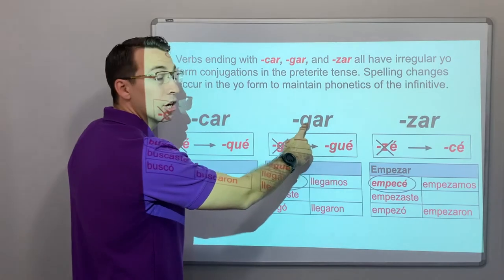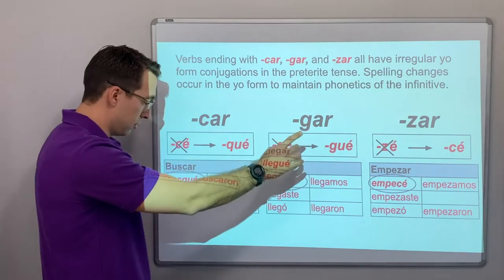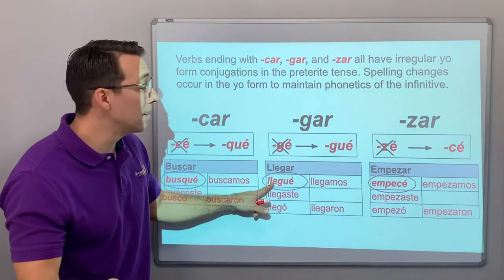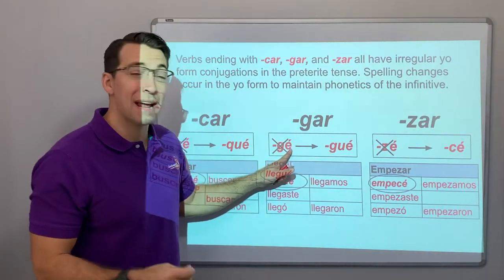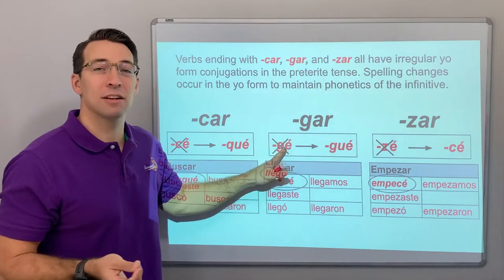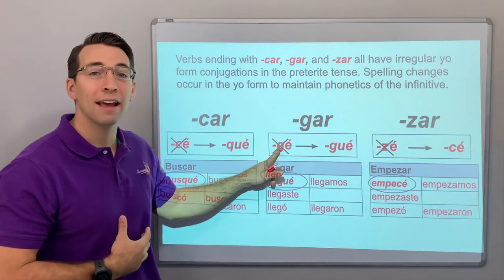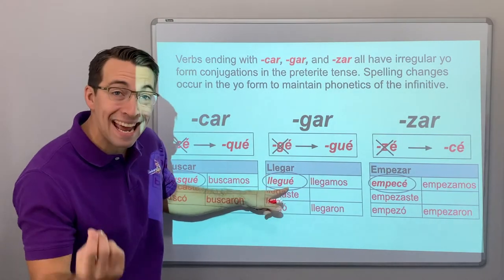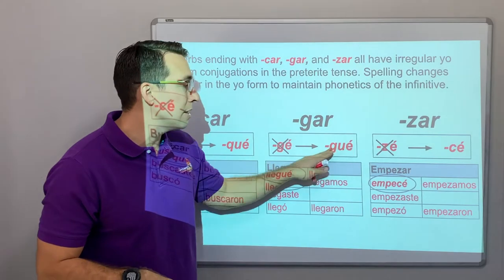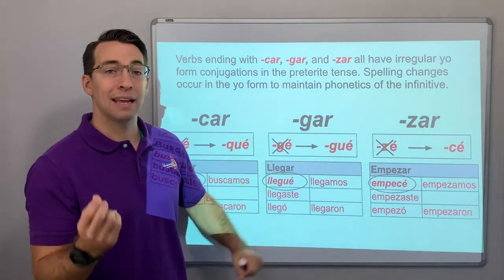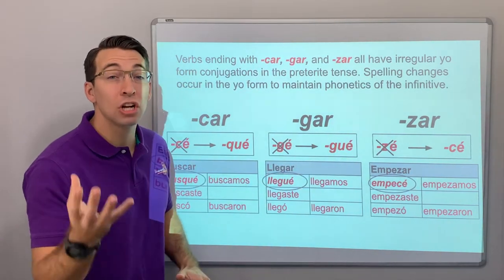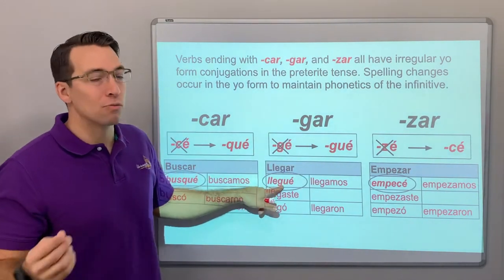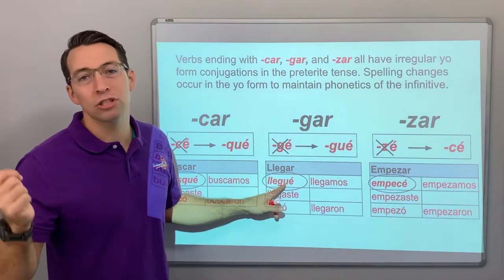For -gar verbs, if we have G followed by E, it creates an H sound — 'yo jehe.' No, I didn't 'jehe' anything! I 'yo llegué.' So if we put a U in between the G and the E, it gives us the G sound — the U is silent. Yo llegué — I arrived. Yo llegué anoche — I arrived last night.